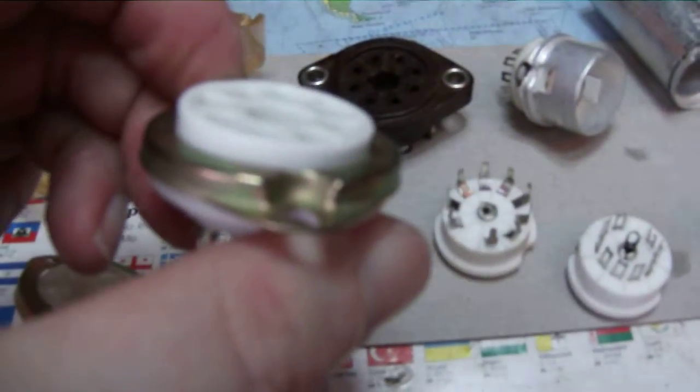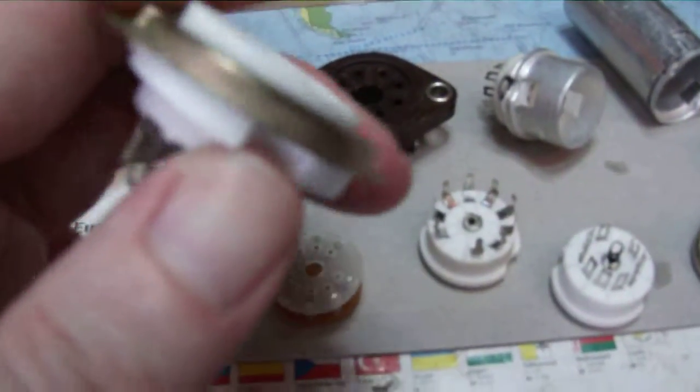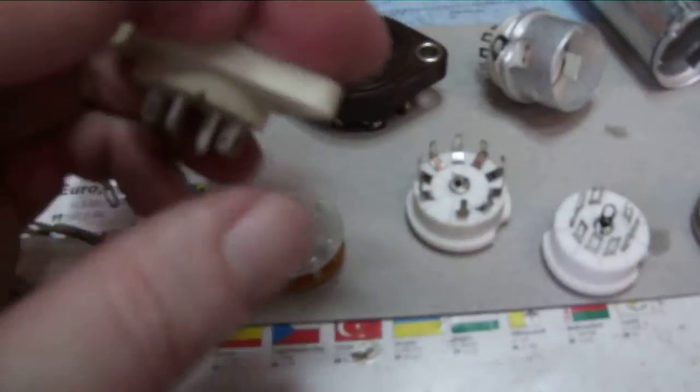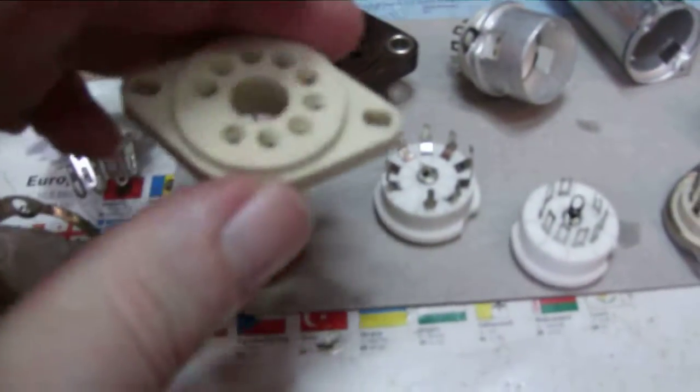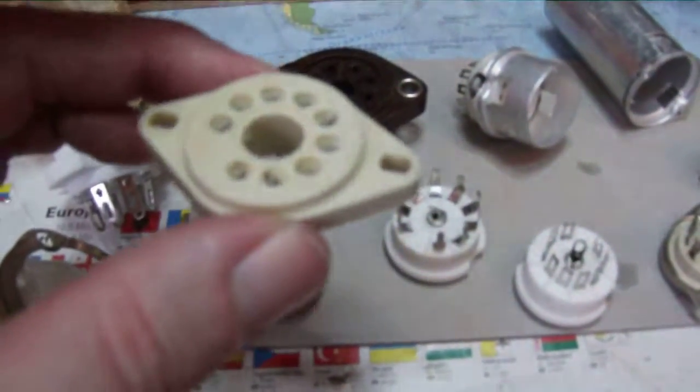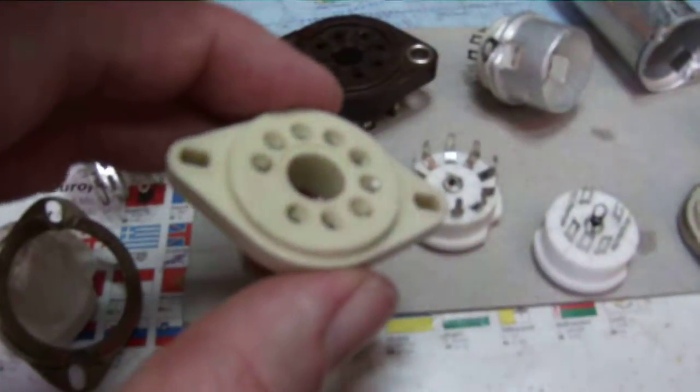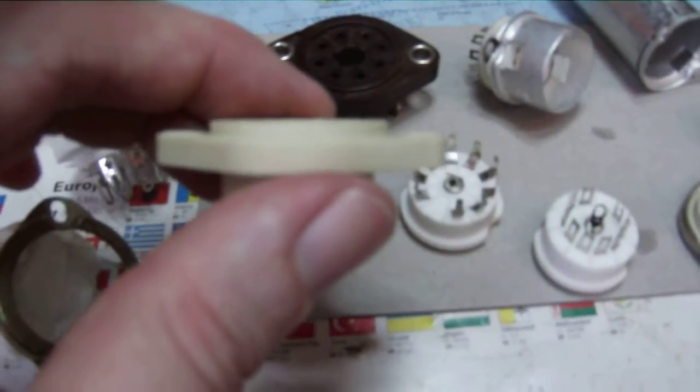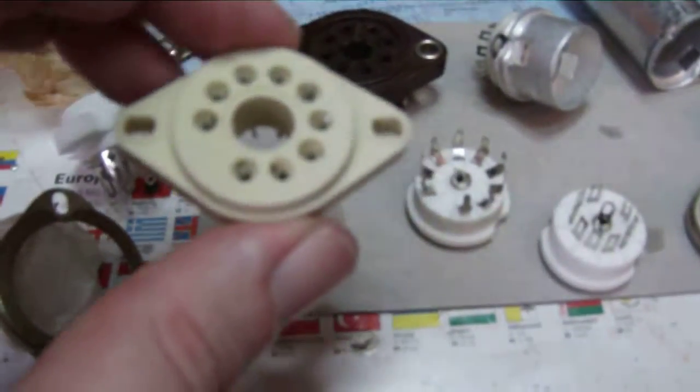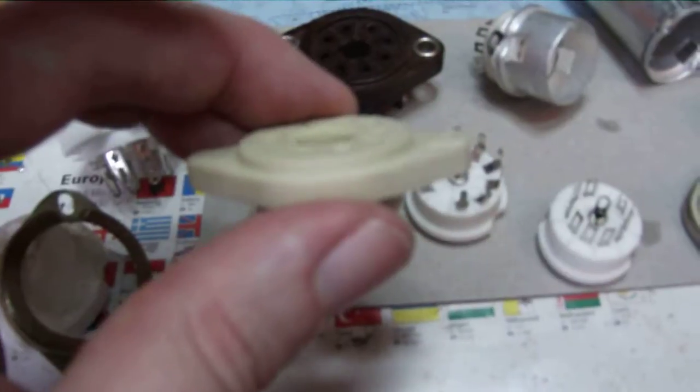This needs a rubber standoff because if you mount this exactly on the matching hole of the chassis, you may try to bend it by screwing too tight, and it will crackle. Or when the tube heats up, like with a KT88 that dissipates much heat, the chassis bends and you crackle the whole thing.